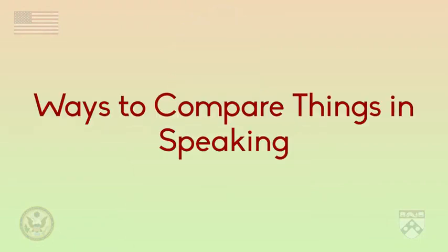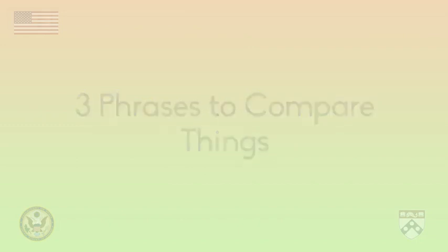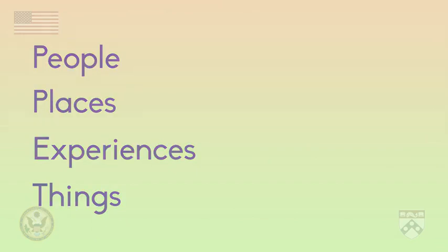Hello! In this video, we're going to talk about ways to compare different things in speaking. In English, we use certain phrases to discuss things that are similar or different. We often use these phrases as a way to describe two or more people, places, experiences, or things. Let's begin by talking about phrases used to compare two things.